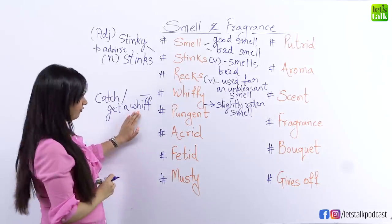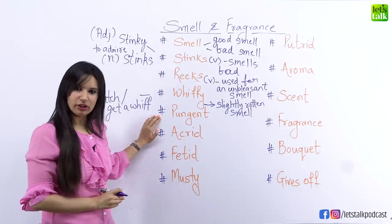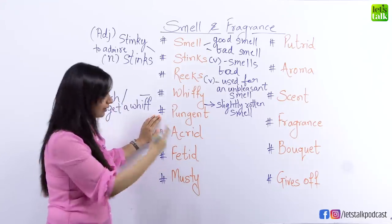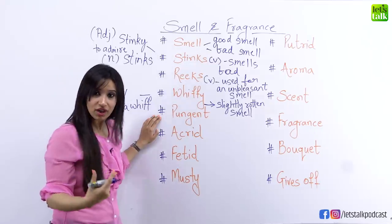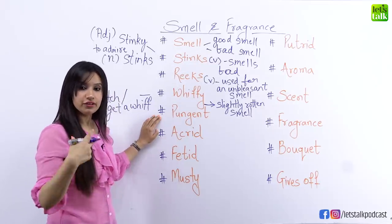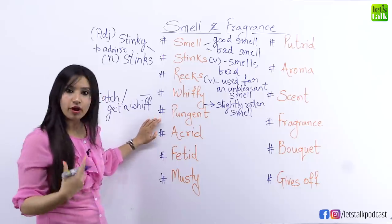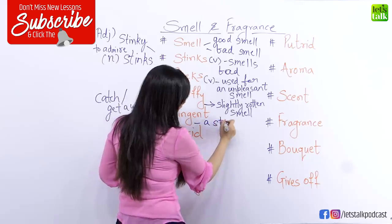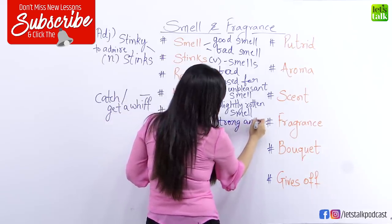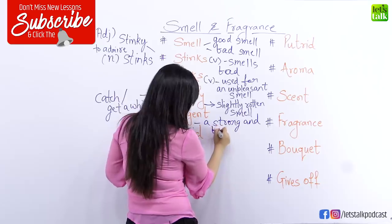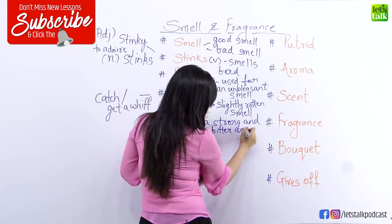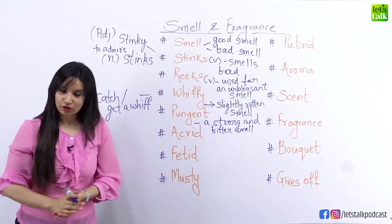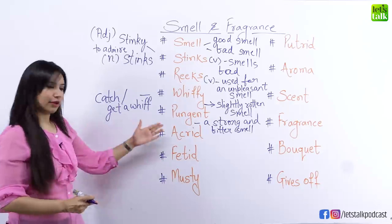You could also use 'whiff' with the word 'pungent'. Pungent means a very strong and bitter smell — it's much more than unpleasant because it's bitter and very, very strong. So when you go to a fish market, you get a pungent whiff. You can use 'pungent' and 'whiff' together by saying when I went to the fish market, I got a pungent whiff.